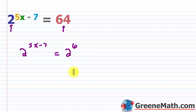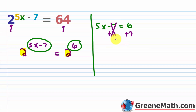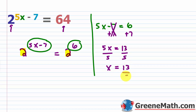Now through a little manipulation, I have like bases — two and two. So I just set the exponents equal to each other and solve. Five x minus seven equals six. Add seven to both sides: five x equals 13. Divide both sides by five and you get x equals 13 fifths.